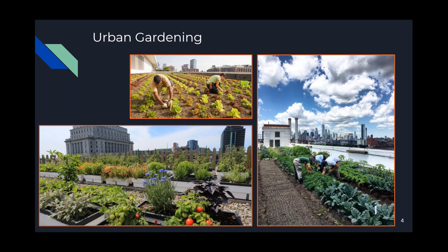Besides all of this, urban and community gardens can also help improve air and soil quality, increase biodiversity of plants and animals, reduce food miles required to transport nutritious foods, and in the process reduce harmful emissions. They can replace impervious structures and improve water infiltration, can reduce neighborhood waste through composting, and positively impact the urban microclimate by reducing the urban heat island effect. Also, gardening just seems to make people happy.